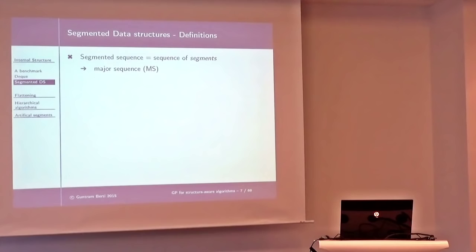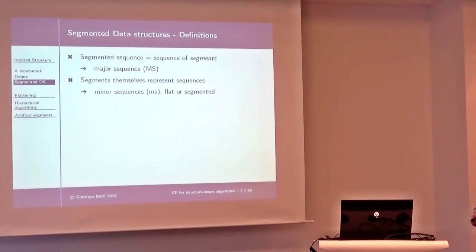Some sequencing definitions are in order. A segmented sequence is a sequence of segments. Using list of vector as our guiding example, the segments will be the vectors and the major sequence will be the list. The segments themselves are sequences — I call them minor sequences because they sit at the lower level of the hierarchy. They can be flat or again segmented. In a vector of vector of vector, we have three layers of hierarchy. The whole sequence is a logical construct which results if you concatenate all minor sequences one after the other — I also call this a flattened sequence.